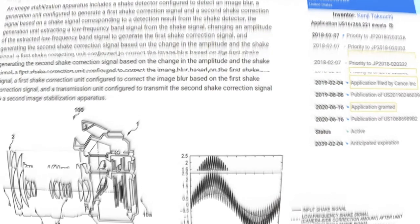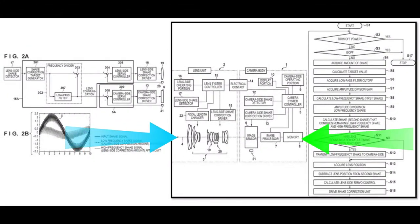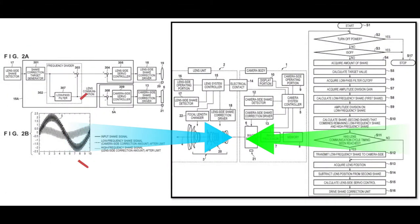Invention further describes working of two units in tandem. Two independent correction signals are generated to fix lens side shake as well as camera side shake.